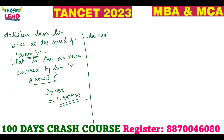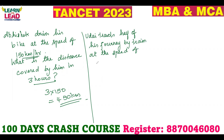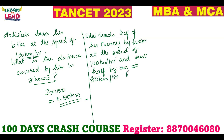Next question. Uday travels half of his journey by train at the speed of 120 km per hour, and the rest half by car at 80 km per hour. What is his average speed?